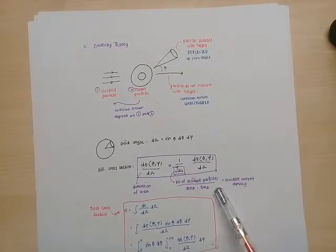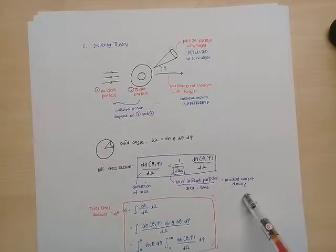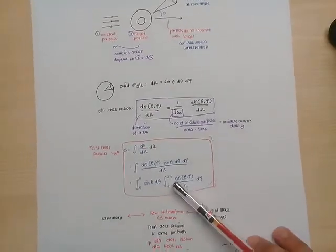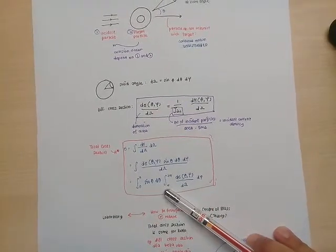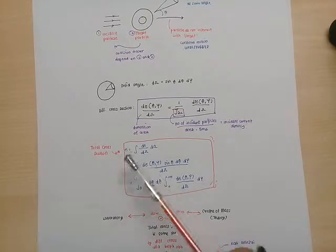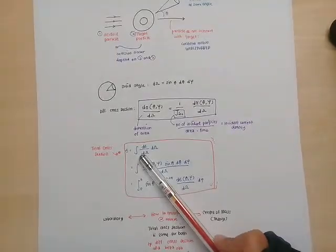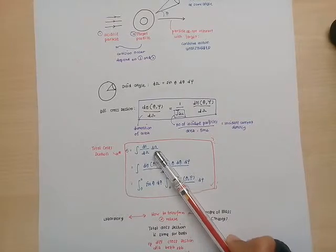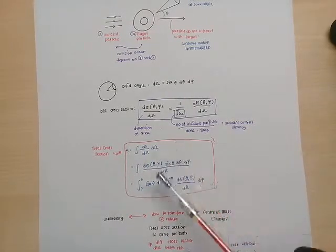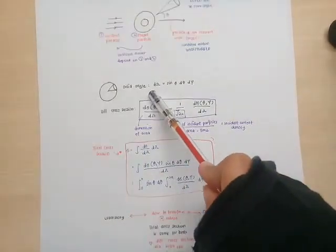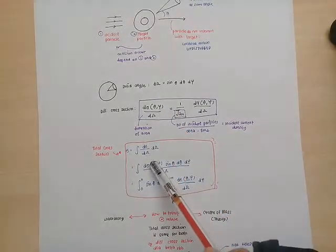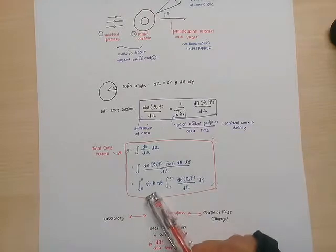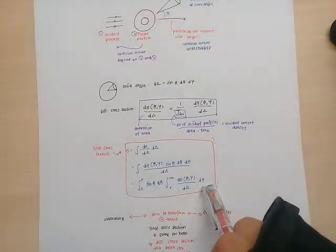Now the total cross-section for scattering can be calculated by integrating the differential cross-section with the solid angle. We can substitute the solid angles into these equations, and when we integrate, we get these equations.